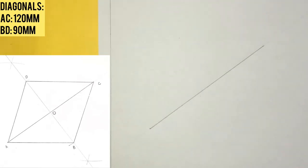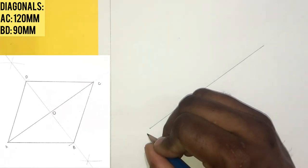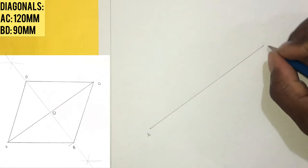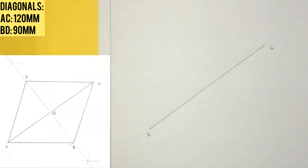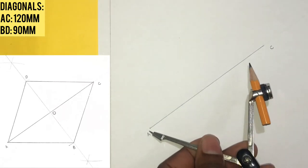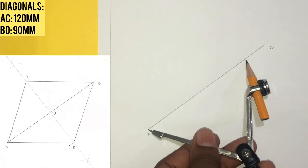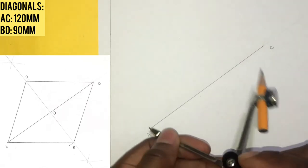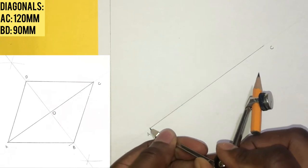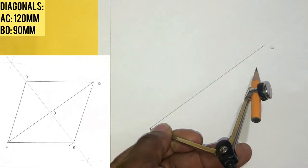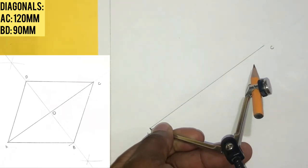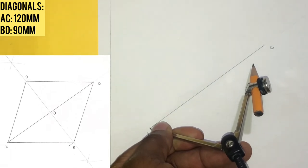I will now bisect this line AC. In order to bisect AC, I will open my compass to more than half the length of AC. And with my compass at A and C, I will scribe intersecting arcs above and below the line AC.